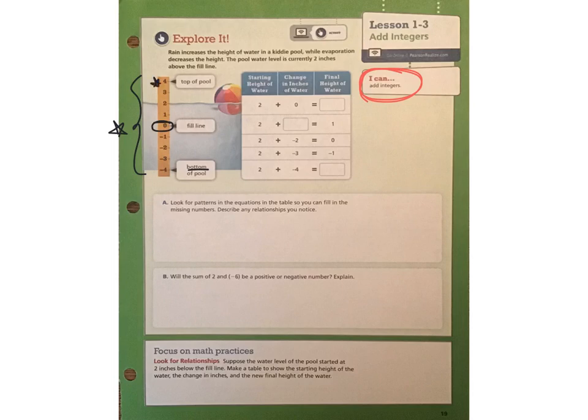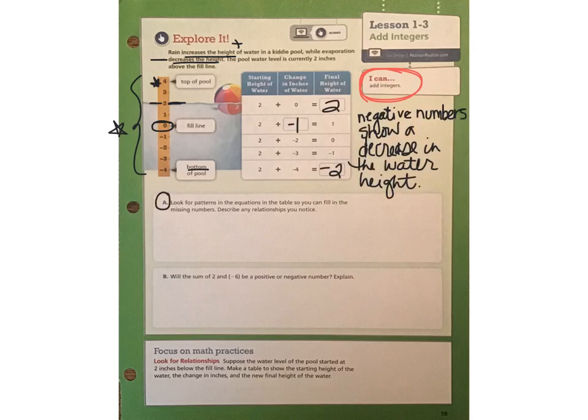So take a look at the table. We have the starting height of water, which is at 2 inches above the fill line. The change in inches of water is going to tell us how that water is either increasing or decreasing in height. An increase of height would be a positive number, while a decrease in height would be a negative number. And then our final column here talks about the final height of the water. So we have a couple of values in the table that are missing. Pause the video, see if you can fill in the table, and then come back and let's talk and check your answers.